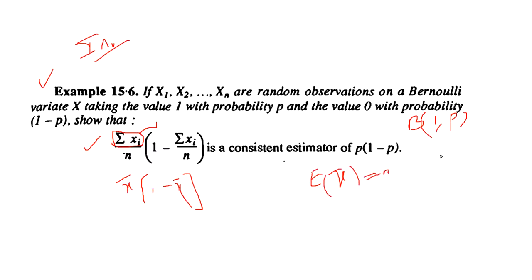We check the necessary and sufficient condition: E[x̄] = p (unbiasedness confirmed), and Var(x̄) = pq/n, which tends to 0 as n → ∞. So x̄ is a consistent estimator for p.